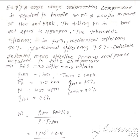Unit 6, Lecture 20, Example 7. A single-stage reciprocating compressor is required to handle 30 meter cube of FAD per hour, measured at 1 bar and 298 Kelvin. The delivery pressure is 6.2 bar.